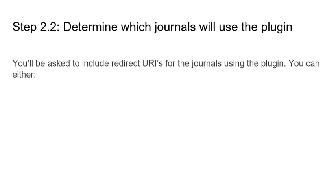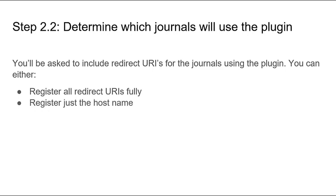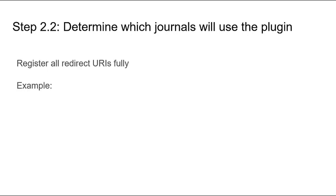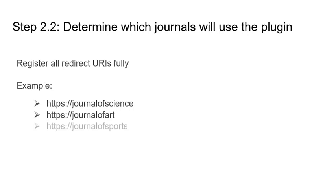When you complete the member API application form, you will also be asked to include redirect URIs for the journals that will be using the plugin. It's a good idea to consider now which journals will be using the plugin so that you are prepared to complete the form. You have two options for listing redirect URIs. You can register all of the journals' URIs separately. If you choose to register all of the journals' URIs fully, you'll list the URI for every journal that will be using your institution's member API and setting up the ORCID plugin. So if you're a library publisher hosting the Journal of Science, the Journal of Art, and the Journal of Sports, you'll list each of these URIs in the application form.